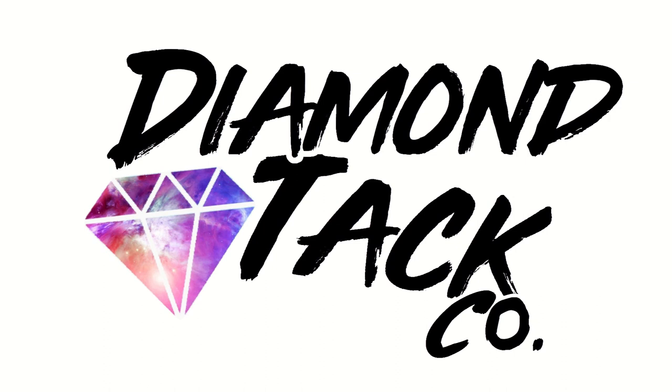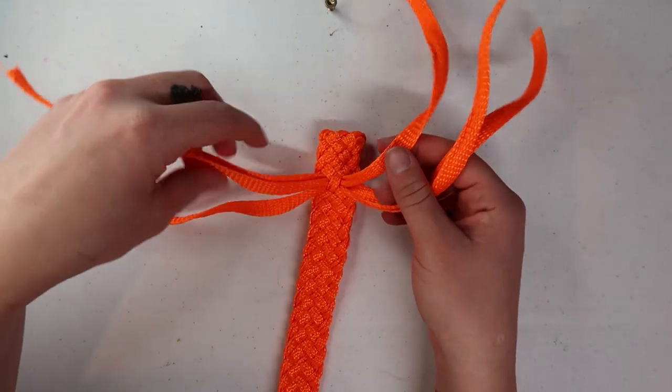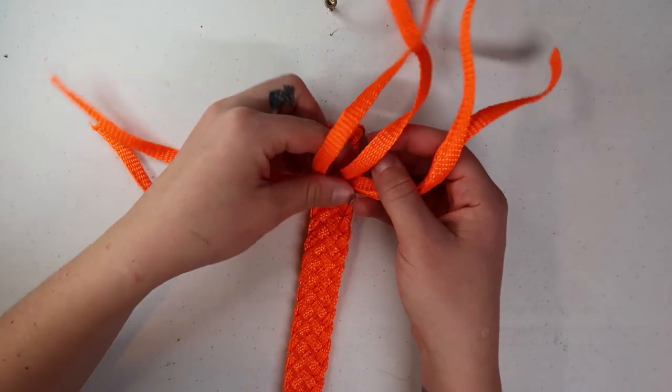Now a crown knot is typically done with three strands. This will be done with six, but it will follow the exact same pattern as you would a regular crown knot. And you can even add more strands if you need to, or an uneven amount of strands.